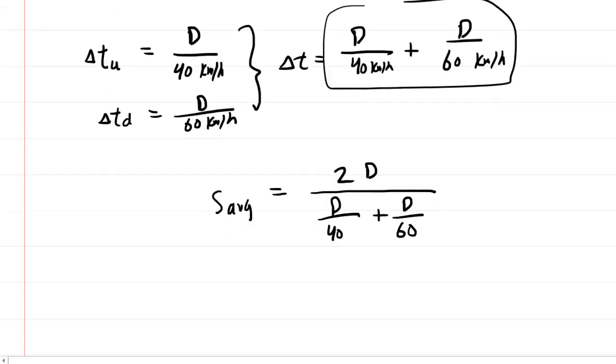We'll omit the units for now for clarity. What I suggest we do is add the like terms on the bottom. Notice this is 1d over 40, and this is 1d over 60. So I would pick up my calculator and do 1 over 40 plus 1 over 60. They are like terms, and therefore we can add them together. When you do that, you get 1 over 24d.